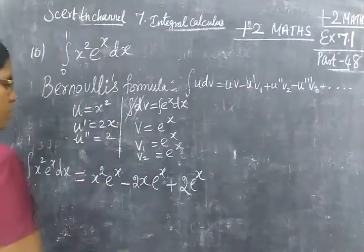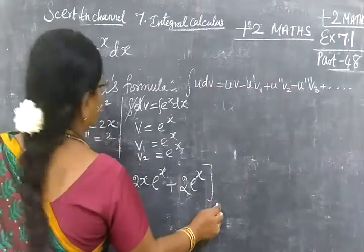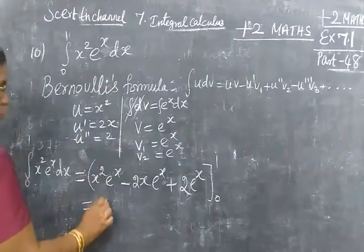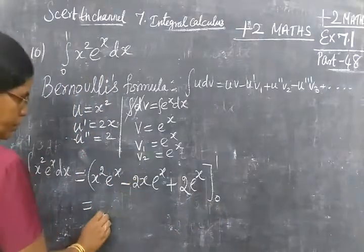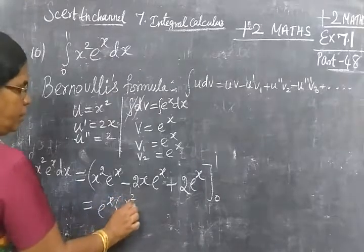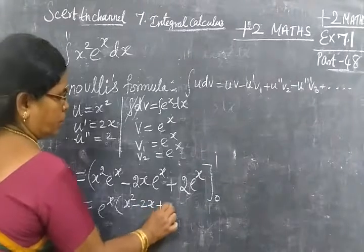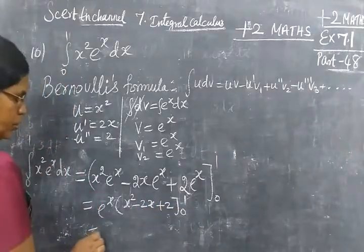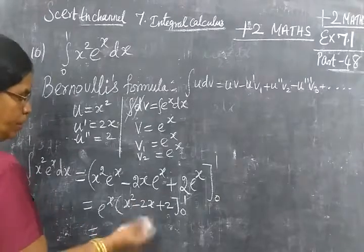Now that's all. The limit is 0 to 1. So e power x is common. So take e power x outside. So x squared minus 2x plus 2, integral 0 to 1. Now apply the limit.